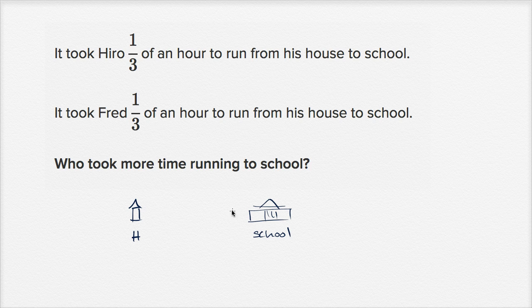And you might say, okay, well maybe Fred's house. Who knows where Fred's house is? Fred's house could be here. It could be there. It could be over here someplace. We don't know where Fred's house is. We don't know if it's closer or further away than Hero's house. So you might be saying, we don't know.